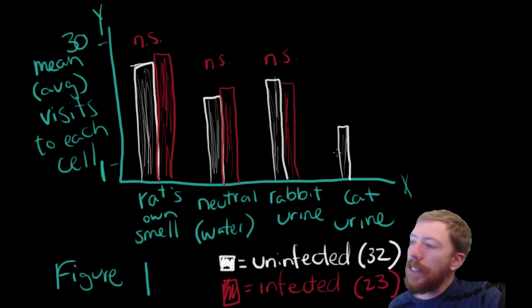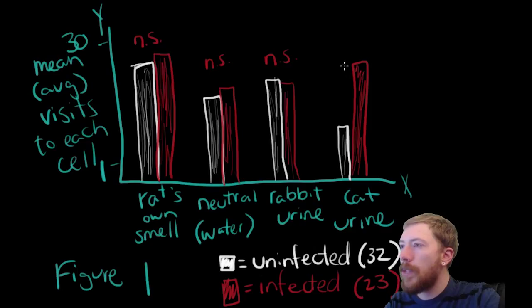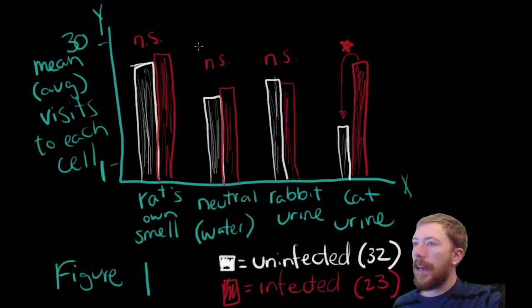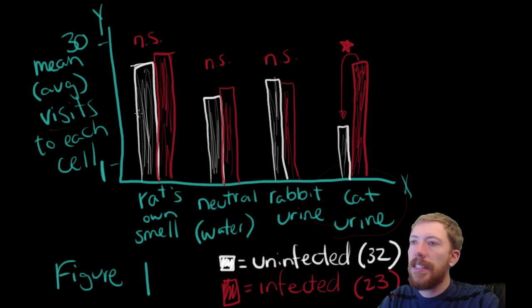But now, something really funny happens with the cat urine. Which is that, for whatever reason, these rats actually spend quite a lot of time hanging near cat urine. And we call this difference significant. It's usually denoted by a star. So, what this means is that these infected rats spent a lot more time, a significant amount of time near the cat urine relative to these uninfected rats. And you'll notice, actually, that aside from their own nest, they spent the second most amount of time towards this cat urine. So, I've been saying time, but really you should think of this in terms of visits. But these rats were visiting these cat urine cells way more when they were infected than when they were uninfected.